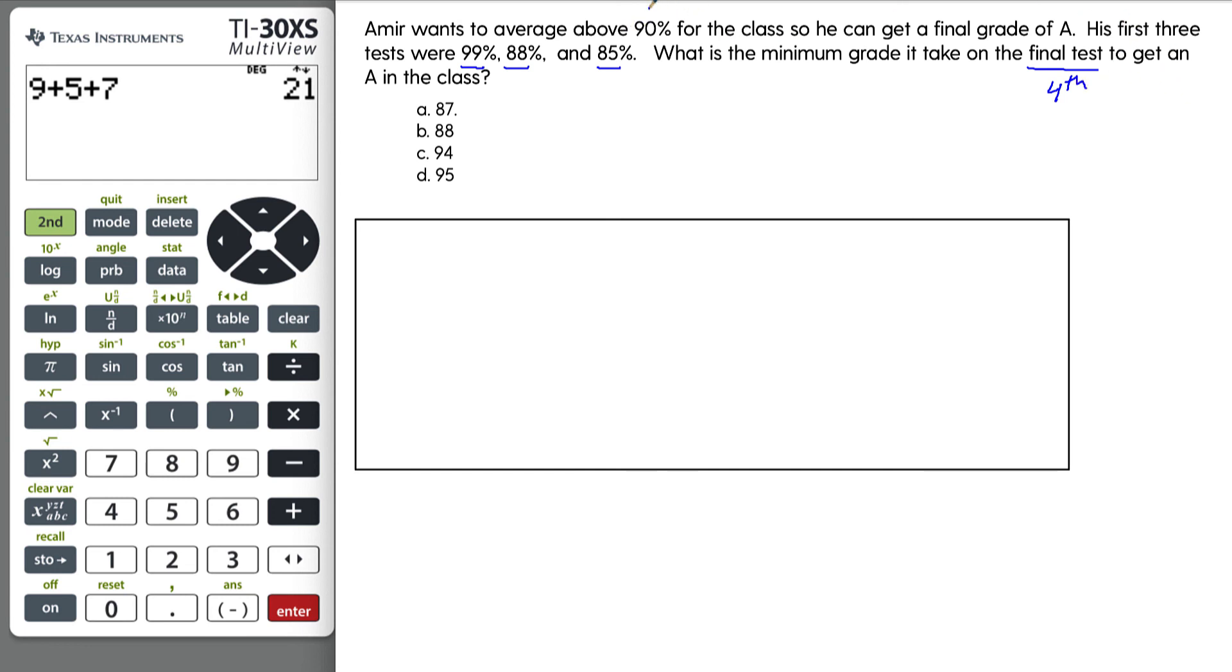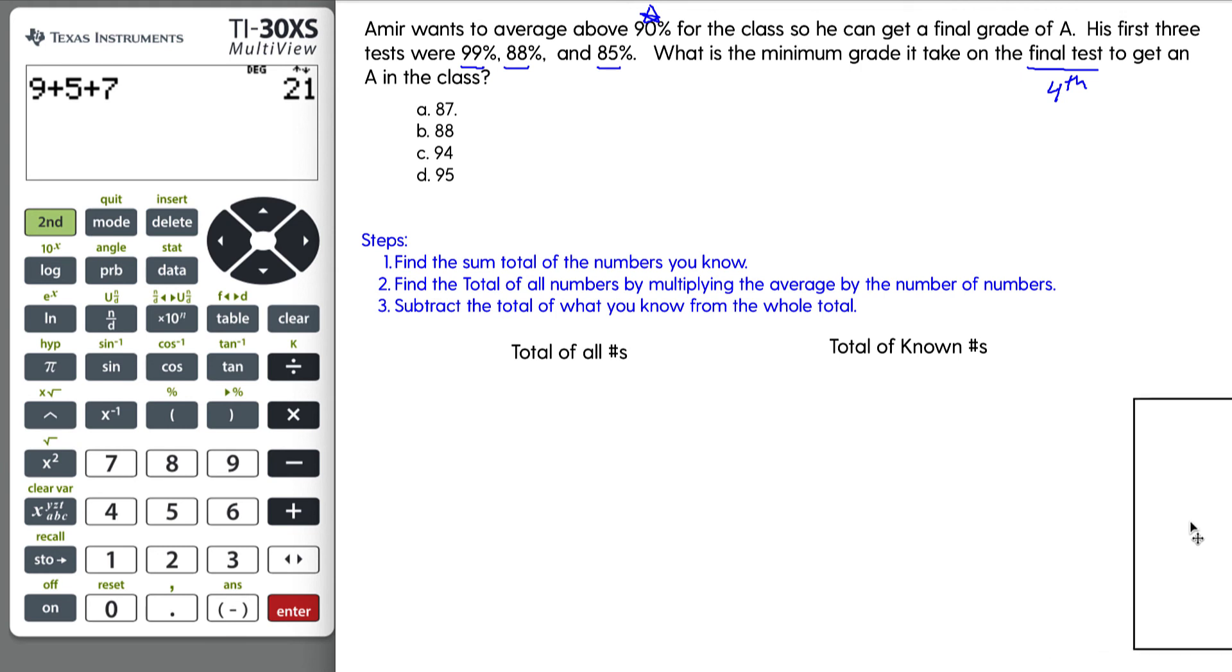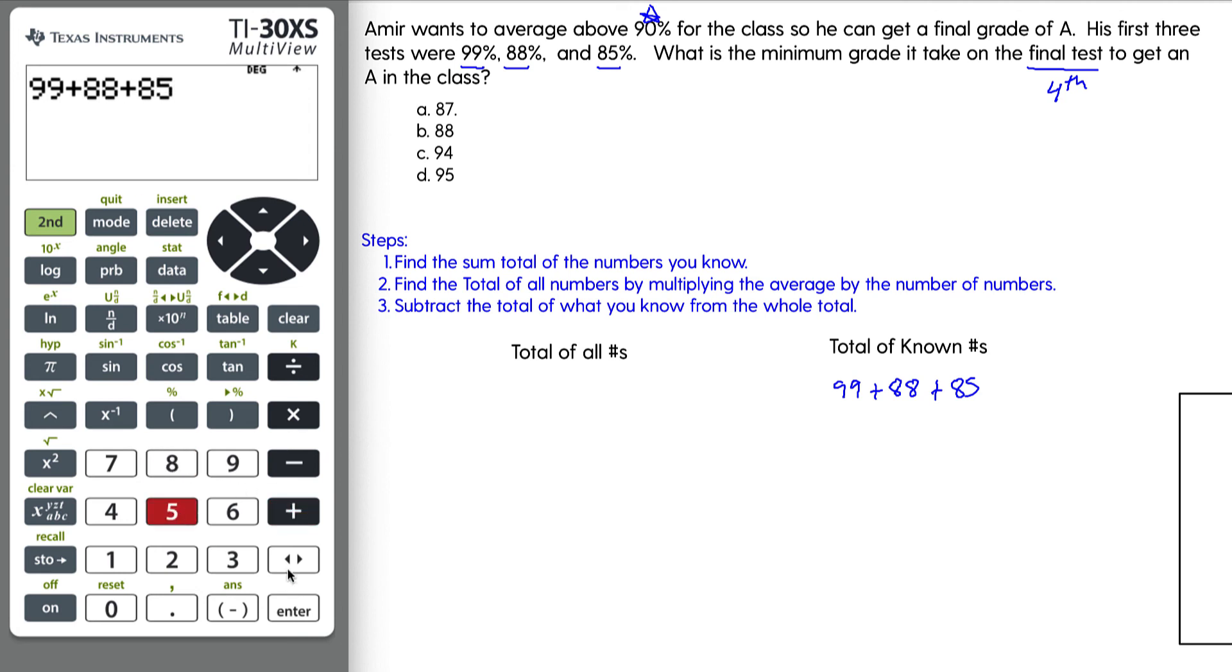So the total number of numbers that we know is adding up these numbers here: 99 plus 88 plus 85. So let's go ahead and use the calculator here. 99 plus 88 plus 85 equals 272. So that's how many total points Amir has right now in the class. And if there's four tests, assuming they're all worth 100 points, and he wants to average 90 percent, the average is equal to the sum total, which just means to add them up, divided by the number of numbers.